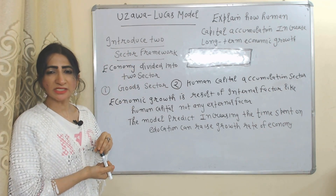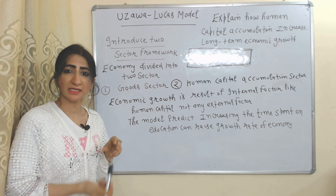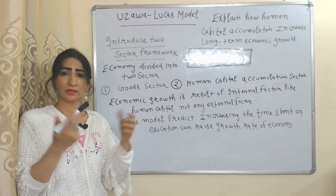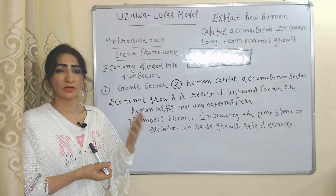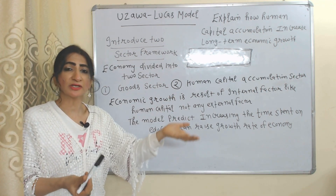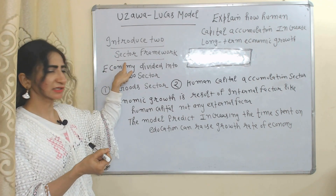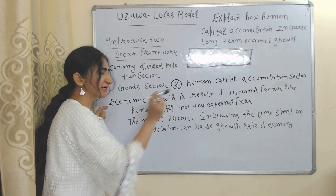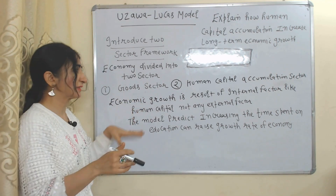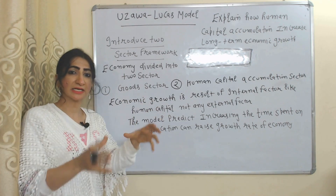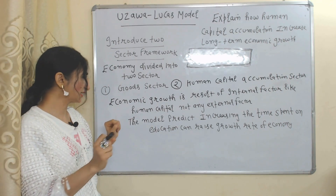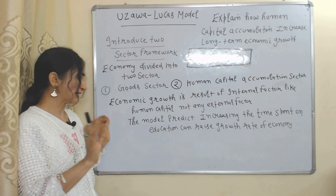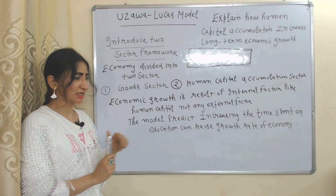Next, the Uzawa-Lucas model explains how human capital accumulation can increase the long-run growth of any economy. Human capital accumulation means increasing the knowledge, skills, and experiences of human beings, which eventually increases their productivity. This model introduces a two-sector framework: a goods sector, where goods and services are produced, and a human capital accumulation sector, where knowledge and skills are developed. According to this model, economic growth results from internal factors like human capital, not external factors.